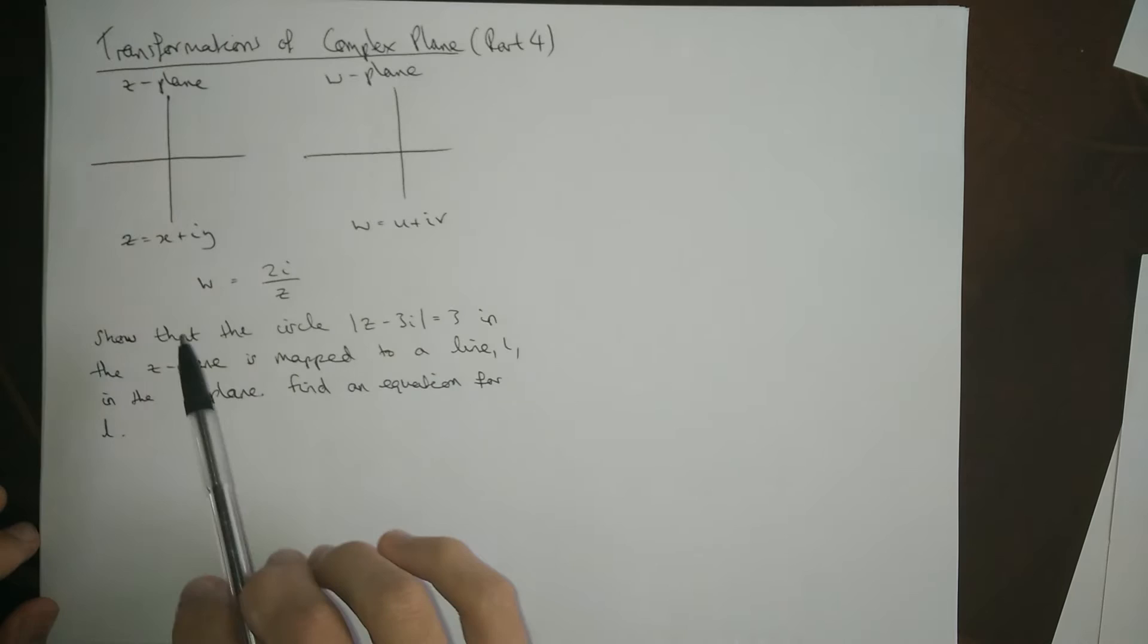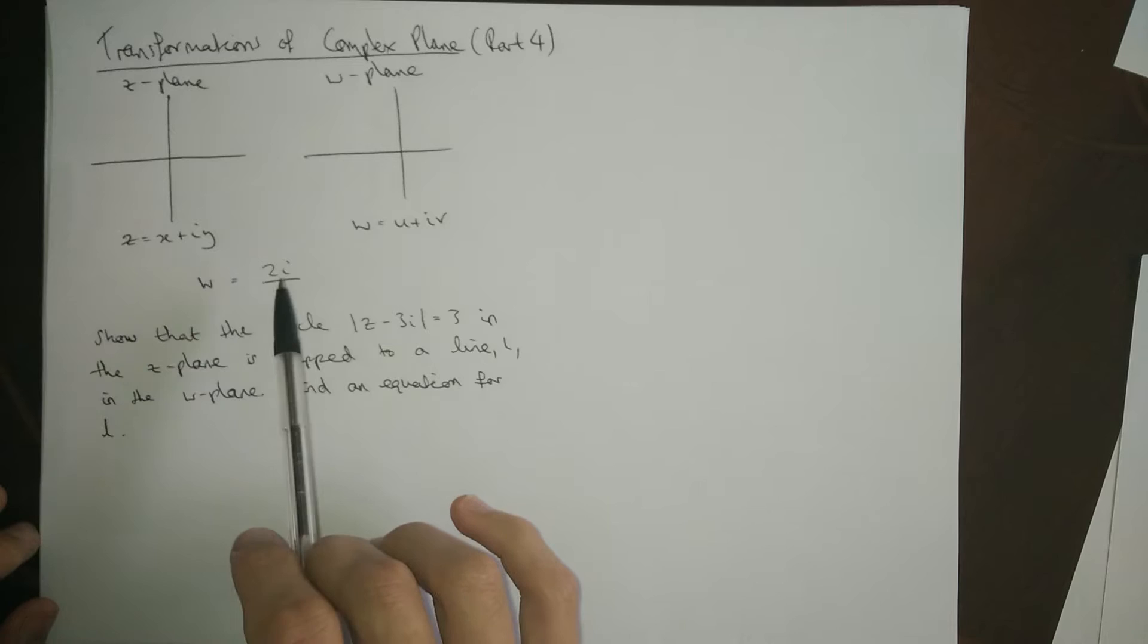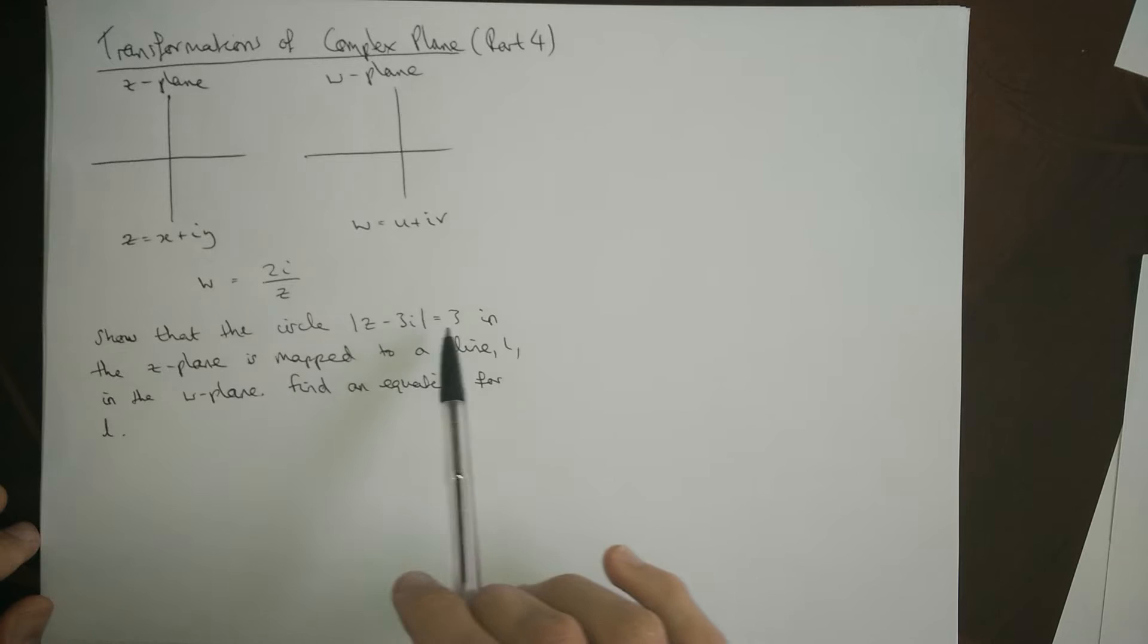This is the question this time, different than before. We've still got the same sort of Mobius transformation, W is equal to 2i divided by Z. We've got a different question. Let's show that this circle, which is given as a loci rather than a Cartesian format, in the Z plane is mapped onto a line in the W plane and we want the equation for the line in the W plane.